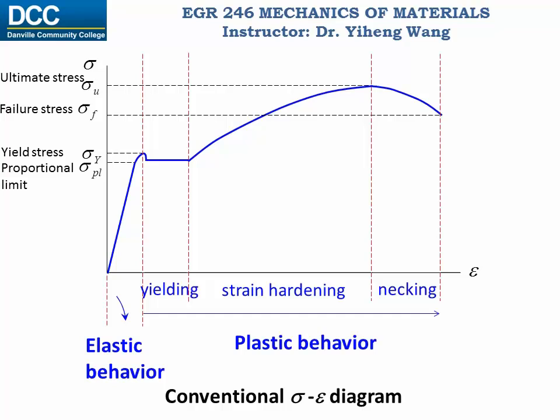You may wonder why the ultimate stress is higher than the failure stress — shouldn't it be the other way around? Remember, this is the conventional stress-strain diagram. On the true stress-strain diagram, the failure stress is indeed the highest stress the material experiences. Note that this is just an example; different materials, for example brittle versus ductile materials, may have different diagrams, and a compressive diagram would look different than a tensile diagram.